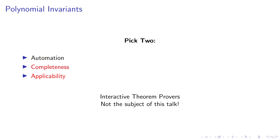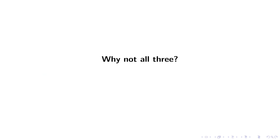Finally, we can give up on automation and just use an interactive theorem prover that uses extra input from the user to find the proof that some assertion is an invariant. So the question is: why can't we have all three criteria — applicability, automation, and completeness guarantees? And the answer is: actually we can. I'm going to show you a very simple way of generating invariants that provides all three guarantees.